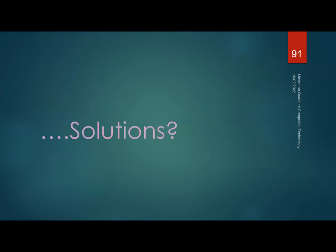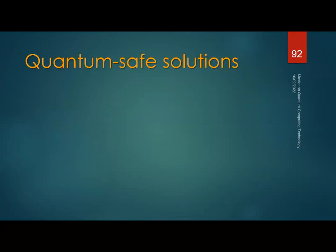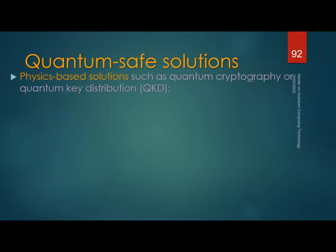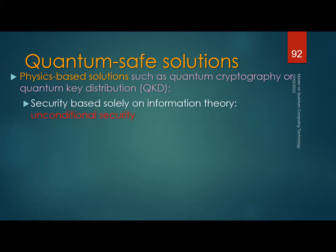What are the solutions? There are two types of quantum-safe solutions. The first are physics-based solutions, such as quantum cryptography — more precisely quantum key distribution (QKD). Its security is based on information theory alone, so it's not bounded by the computational power of an adversary. Even an adversary with a quantum computer cannot break it. This is referred to as unconditional security.